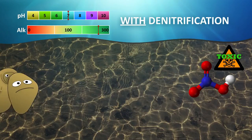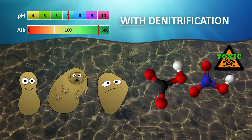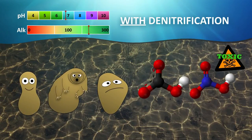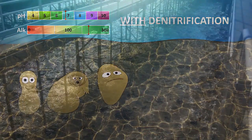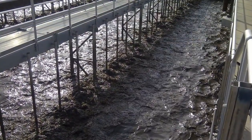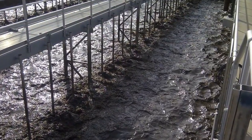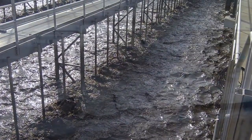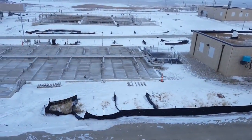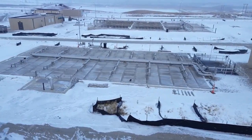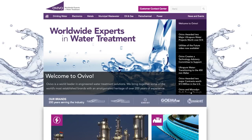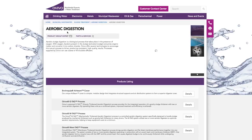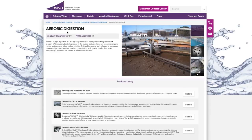Alkalinity recovery due to the denitrification step is important because it can neutralize the nitric acid created in the nitrification process. Aerobic digestion is a critical piece of many treatment plant solids handling solutions. Optimizing and operating this process can not only save operators a lot of headaches, but can also reduce cost and improve the environment. For more information, please contact your local Ovivo sales representative or visit us on our website.